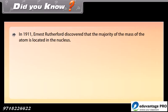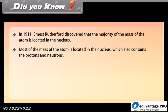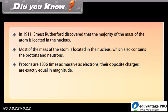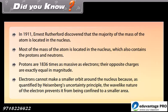Did you know: In 1911 Ernest Rutherford discovered that the majority of the mass of the atom is located in the nucleus. Most of the mass of the atom is located in the nucleus which also contains the protons and neutrons. Protons are 1836 times as massive as electrons. Their positive charges are exactly equal in magnitude. Electrons cannot make a smaller orbit around the nucleus because as quantified by Heisenberg's uncertainty principle the wave-like nature of the electron prevents it from being confined to a smaller area.